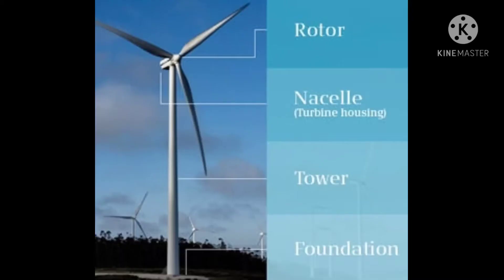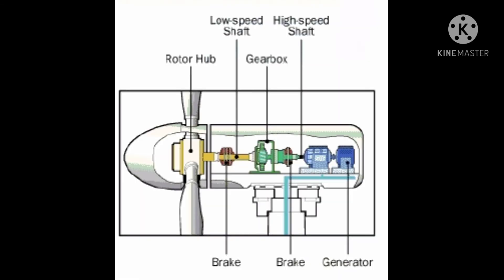Pavan chakki ya windmill ke following parts hote hain: isme ek solid base foundation banaya jata hai, iske upar ek tower lagaya jata hai, jiske upar ek rotor laga rahta hai jisse turbine judi rehti hai. Jab turbine ghoomti hai to rotor bhi ghoomta hai. Rotor ke andar ek armature aur ek gear box hota hai. Jab turbine dheere ghoomti hai, gear box us rotor ki speed ko hundreds of times tak badhaakar armature ko ghuma deta hai, jiske karan armature generator se electricity generate hoti hai, jo battery mein save ki ja sakti hai ya grid mein add ki ja sakti hai.